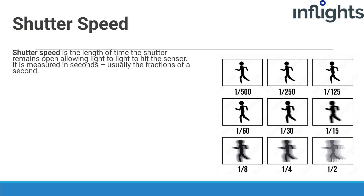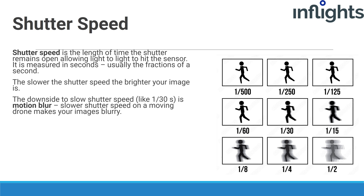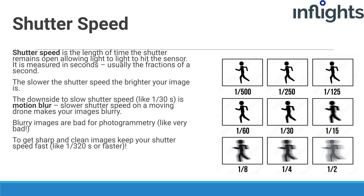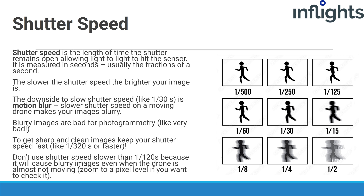Shutter speed is the length of time the shutter remains open, allowing light to hit the sensor. It is measured in seconds, usually fractions of a second. The slower the shutter speed, the brighter the image — but slower shutter speed on a moving drone makes your images blurry, and blurry images are bad for photogrammetry. To get sharp and clean images, keep your shutter speed fast. For most photogrammetry projects, do not use shutter speed lower than 1/120th of a second, as it will cause blurry images. Zoom in to pixel level if you want to inspect image blur.